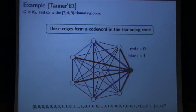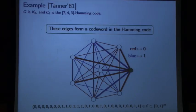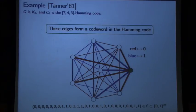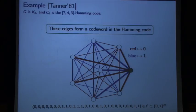Quick example: start with the complete graph on eight vertices. Every node has degree seven, so pick a code of length seven — say the [7,4,3] Hamming code. We assign a code word as an assignment of 0 or 1 to every edge. There are 28 edges in the complete graph on eight vertices, so code words have length 28. The requirement is that at any node, the seven edges coming out of it form a code word in the [7,4,3] Hamming code. You just fix an arbitrary ordering of the edges around each vertex beforehand.